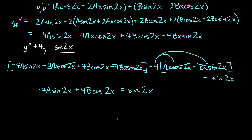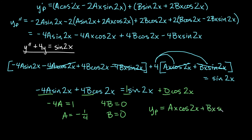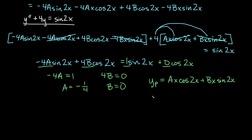Comparing coefficients: the sine 2x coefficient gives negative 4a equals 1, so a equals negative one-fourth. The cosine 2x coefficient gives 4b equals 0, so b equals 0. Plugging back in, y sub p equals negative one-fourth x cosine 2x.